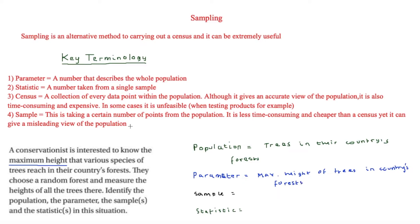The sample is a certain number of points taken from the population. The sample here is the trees in a random forest, because the conservationist measures the heights of all trees there. Finally, the statistic is a number taken from a single sample. As the sample is the trees in the forest, the statistic is the maximum height of trees in the sample.